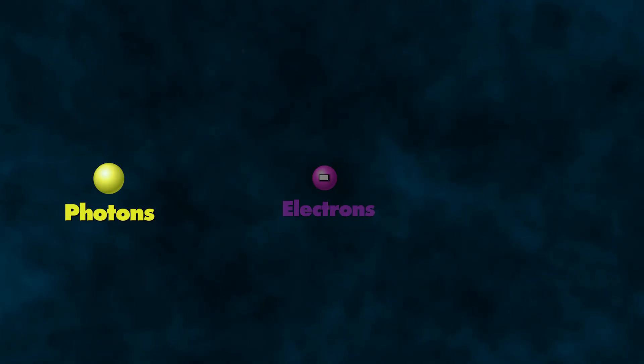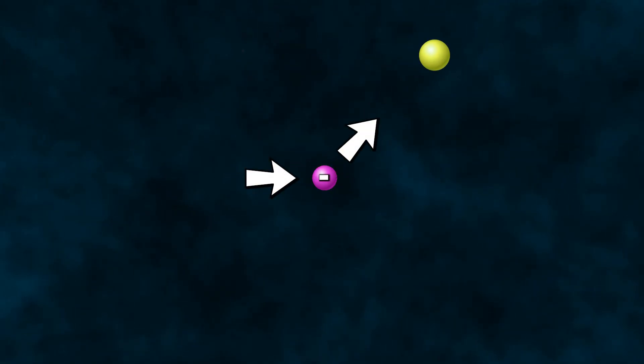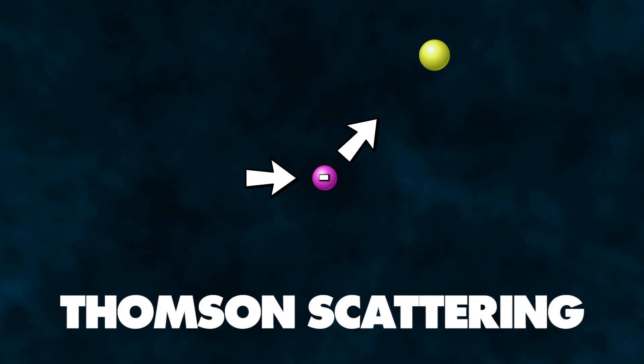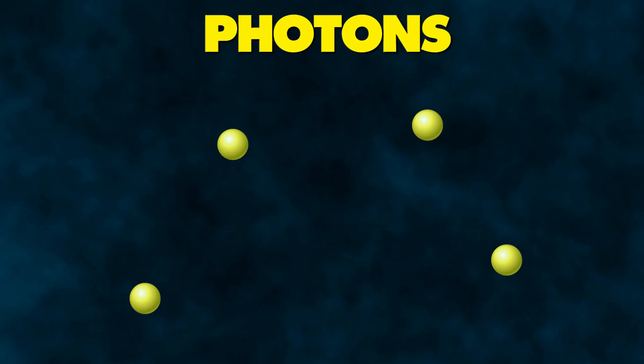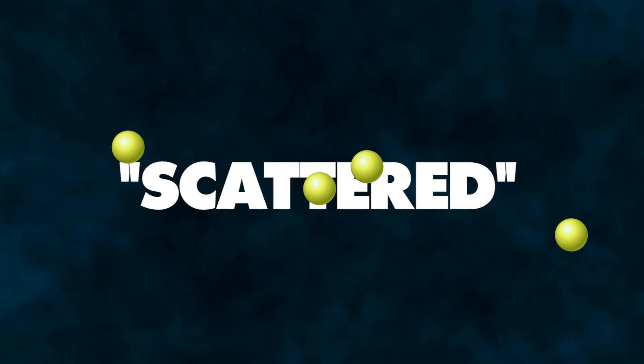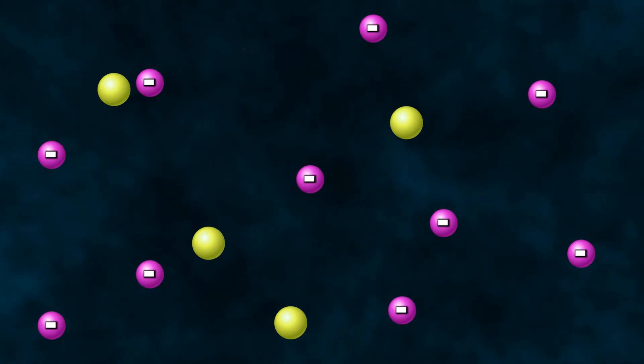You see, photons are actually scattered about when electrons are present in a process called Thompson scattering. Come up with a better name, Thompson! So during this stage of existence, photons were basically just being thrown all over the place, or scattered, by all the free electrons floating around the universe.